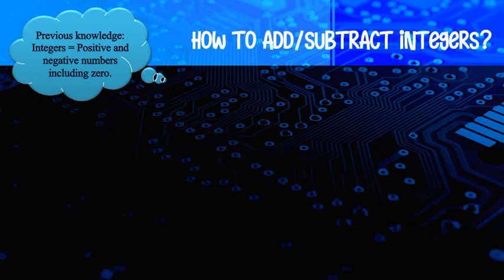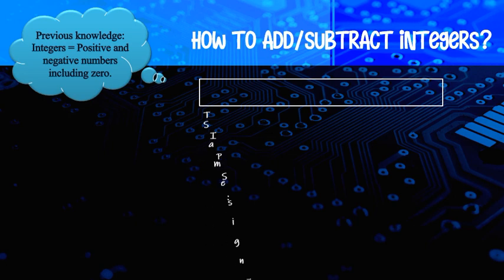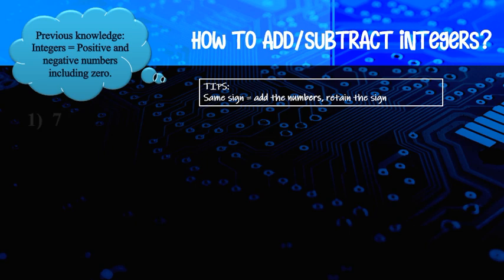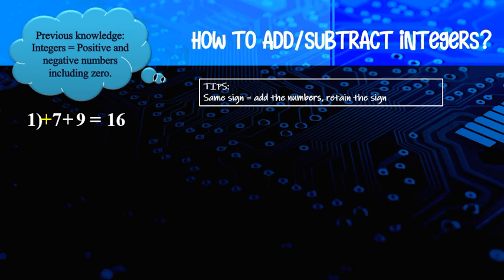How to add and subtract integers. The tips: if you want to add same sign, you add the number and retain the sign. For example, 7 plus 9 — 7 is positive, 9 is positive, same sign, so we add the number: 7 plus 9 equal to 16.